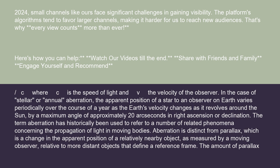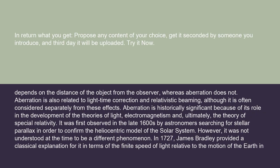The term aberration has historically been used to refer to a number of related phenomena concerning the propagation of light in moving bodies. Aberration is distinct from parallax, which is a change in the apparent position of a relatively nearby object as measured by a moving observer, relative to more distant objects that define a reference frame. The amount of parallax depends on the distance of the object from the observer, whereas aberration does not. Aberration is also related to light-time correction and relativistic beaming, although it is often considered separately from these effects.